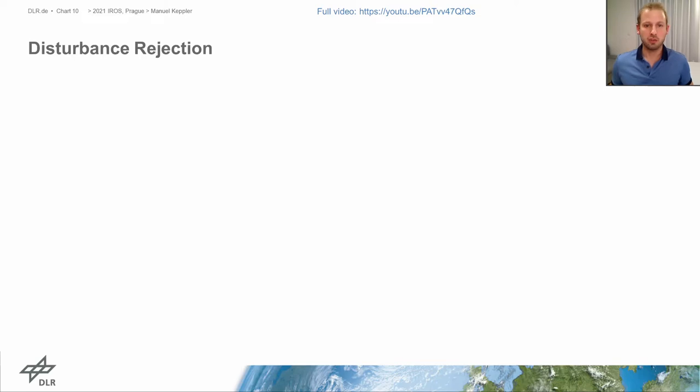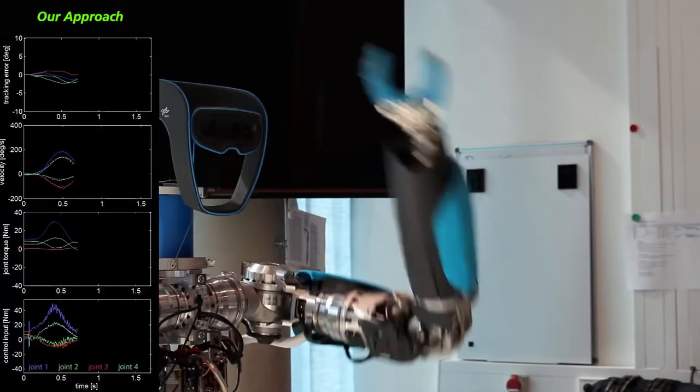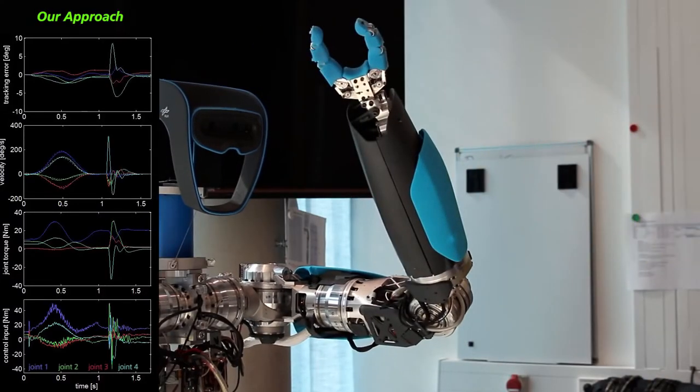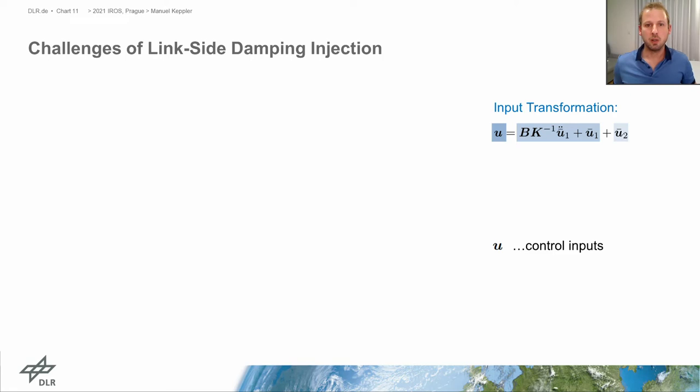However, in situations of harsh impacts, we realize that the injection of a damping behavior directly on the link side requires high actuator torques at the moment of impact. Here, just at the moment of impact, we can see this spike in the control input. In our current paper, we analyze the underlying reasons in detail.